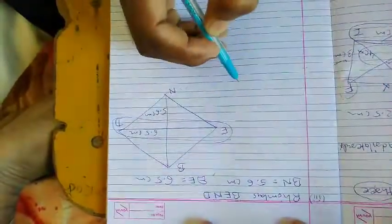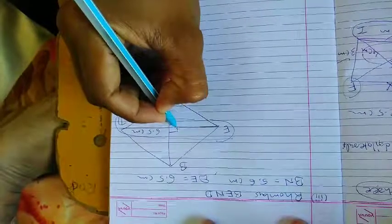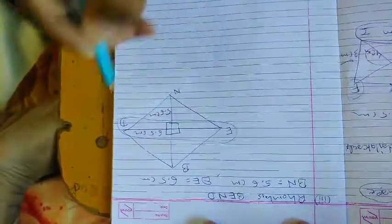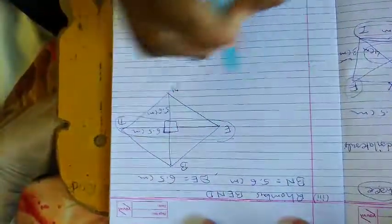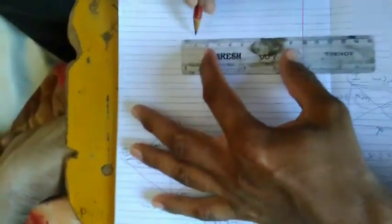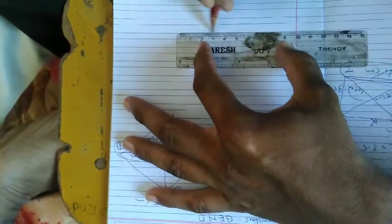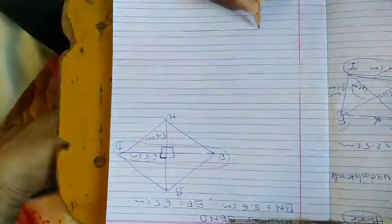First of all, we draw DE. You know very well the diagonals bisect each other at perpendicular, so this angle should be 90 degrees. We draw DE which is 6.5 centimeters. This is your DE, which is 6.5 centimeters.